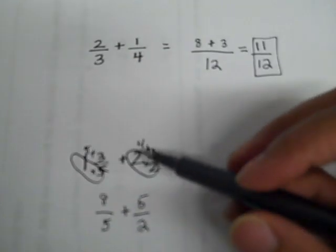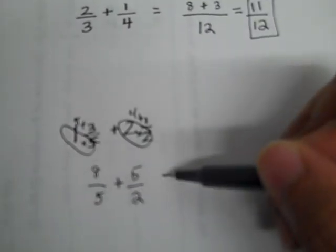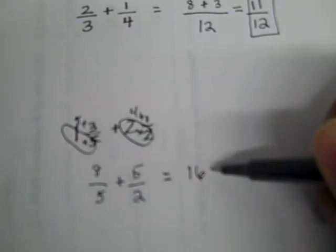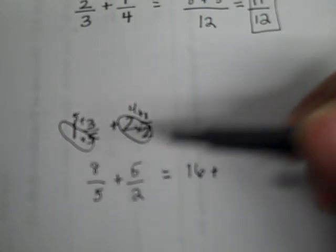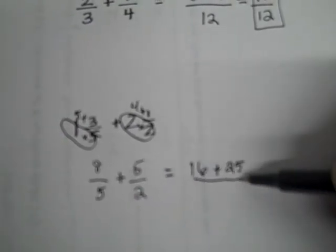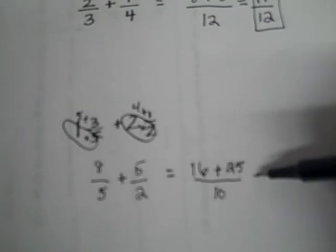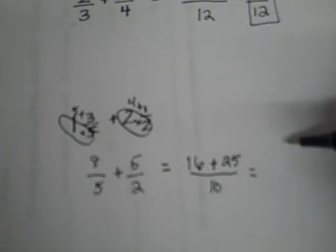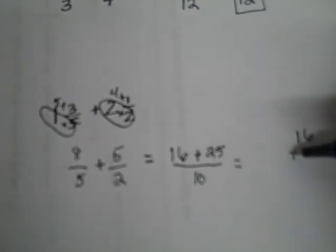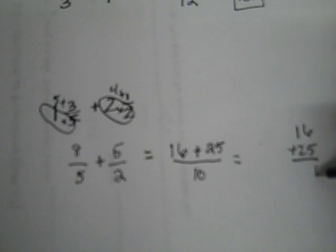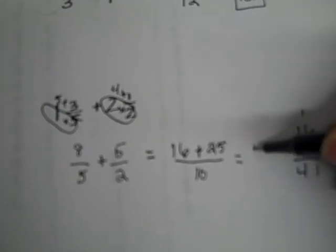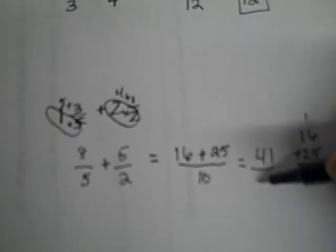Now I'm going to apply the rule. 8 times 2 equals 16. Add that to 5 times 5 which is 25 all over 5 times 2 which is 10. 16 plus 25. If I need to do that off to the side, let me do that. It is 41 over 10.